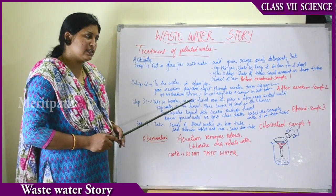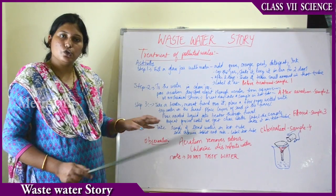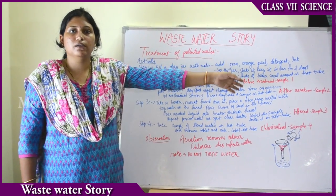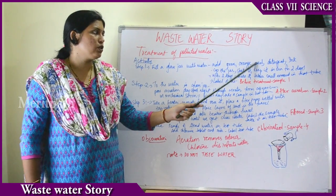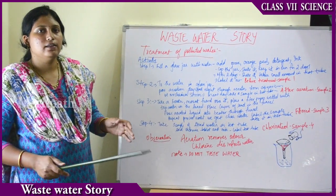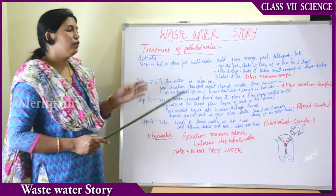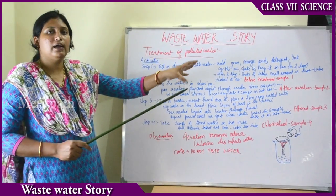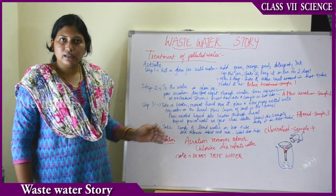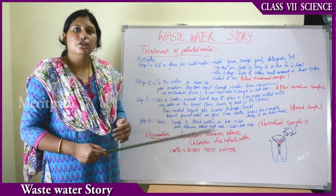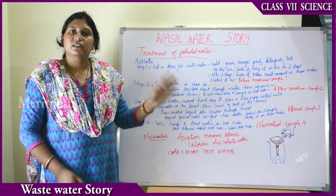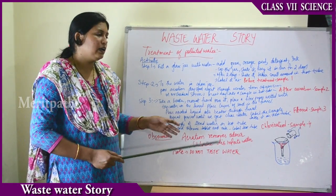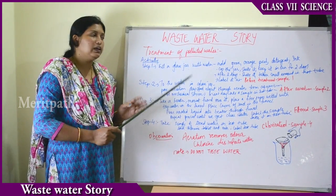One important note: never taste the water because it is full of chemicals and not suitable for drinking. In summary, these four test tube samples show how water is treated: first you polluted the water, then aerated it to remove bad odour, then filtered it through sand to get clean water, and finally purified it with chlorine. This is a brief lab activity to explain the cleaning of polluted water.